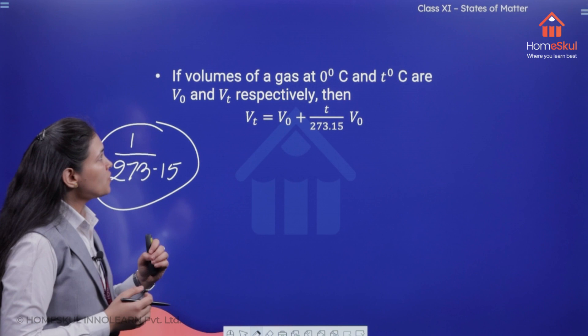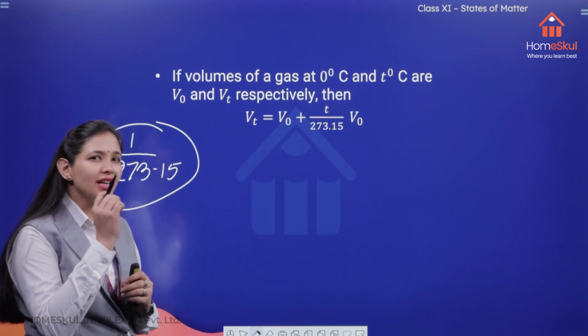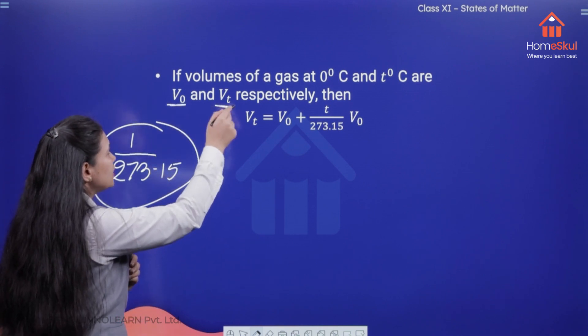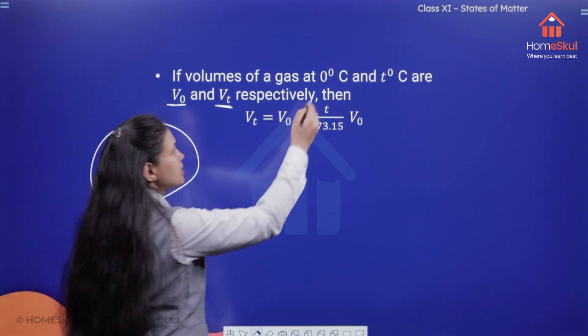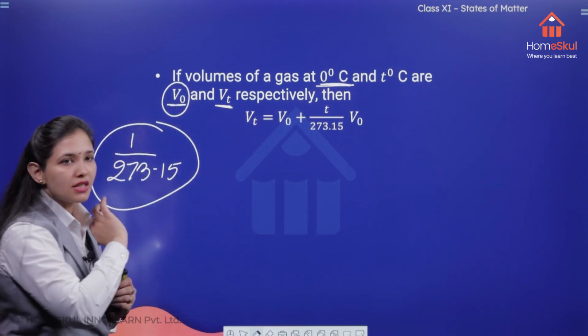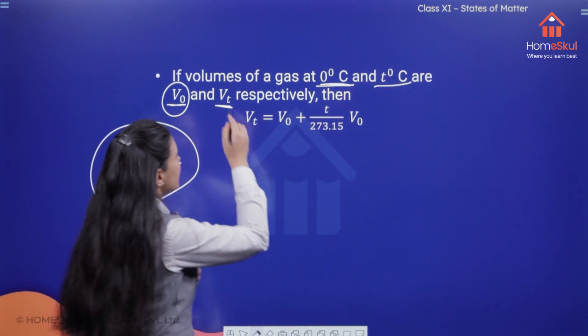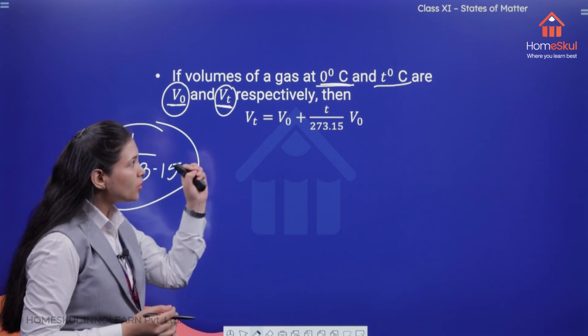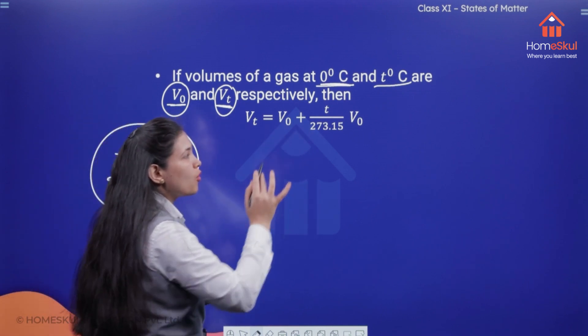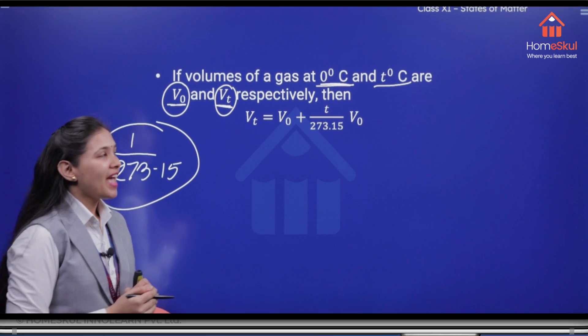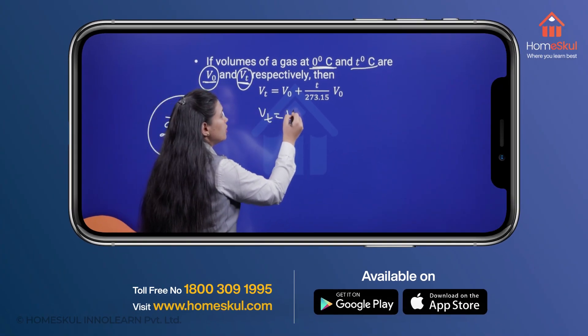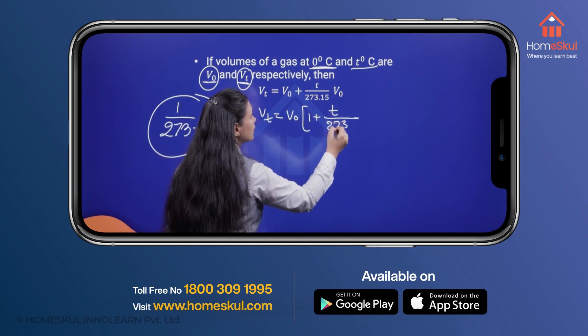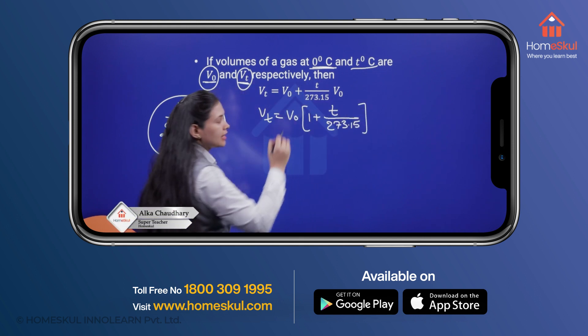So now you can see here if volumes of a gas at 0 degree centigrade and T degree centigrade are V0 and Vt respectively, means at 0 degree centigrade there will be volume V0 and at T degree centigrade there will be volume Vt respectively and we can write this expression that Vt is going to equal to V0 plus T upon 273.15 V0. And now you can see here we can take out V0 as a common 1 plus T upon 273.15.